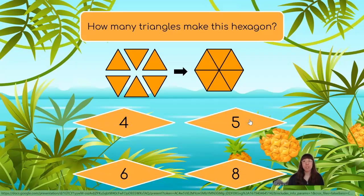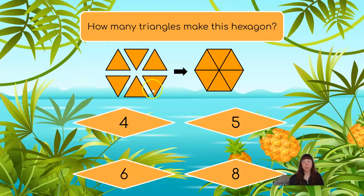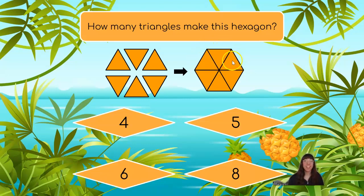How many triangles make this hexagon? We have some orange triangles, and when we put them all together, we can make a hexagon. Let's count to see how many triangles are in the hexagon all together. I see one, two, three, four, five, six. We can use six triangles to make a hexagon!